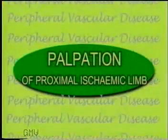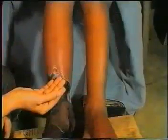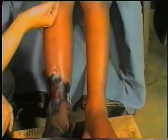Now palpate the ischemic proximal limb. First, test the temperature of the skin with the back of your fingers, proceeding proximally and comparing with the temperature of the opposite leg at the same level. Note the level up to which the limb is cold. In a severe peripheral vascular disease, it may be cold up to the mid-thigh. Skin temperature is a good indicator of the state of skin circulation and is important in deciding the level of amputation if required.